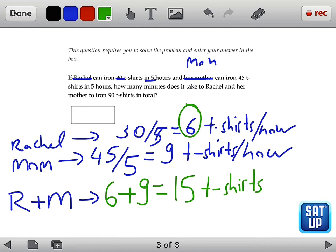Now the last piece of the question is this part, 90 t-shirts to be ironed. Now Rachel and mom can iron 15 t-shirts together every hour and we need 90 t-shirts to be ironed. So how many hours will it take? Can you see?